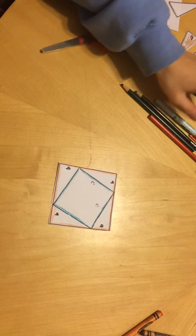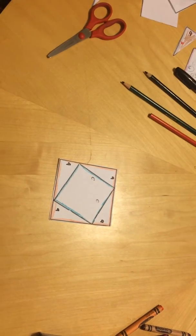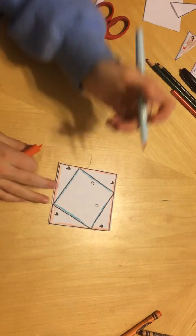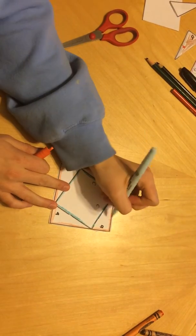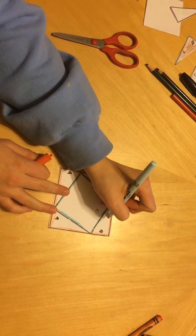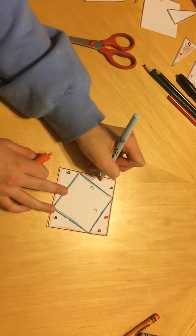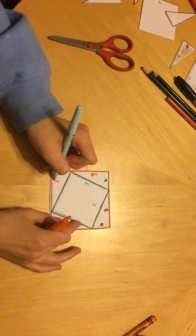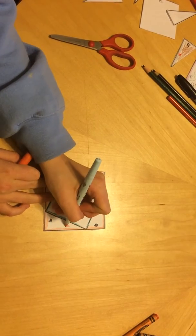The next step is to label the medium side, which would be this side, because this side is C and C is the longest. So this is B, this is B, this is B, and this is B.